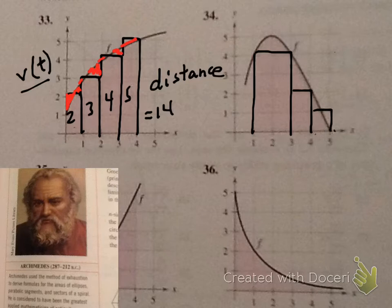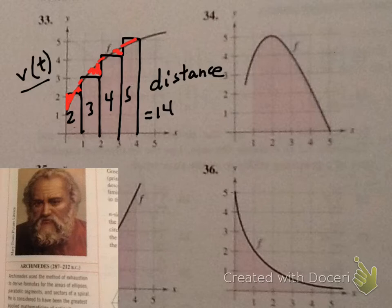But this method of sketching in these rectangles is called the method of exhaustion, and Archimedes down here, he used this method to come up with formulas for polygons, many of which you learn in geometry, by just filling the shapes in with other shapes that we already knew and adding them up.